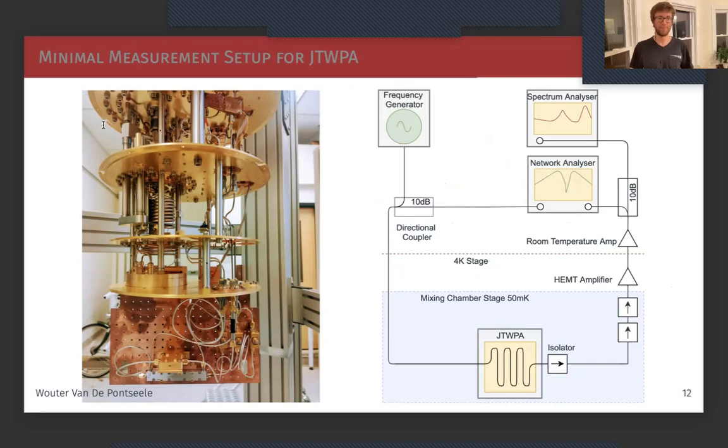So let's go now to the lab that we have at MIT. This is kind of the minimal setup that we use to characterize and test these devices. In the schematic on the right, you have a frequency generator in green on the top left and a network analyzer, and those two will be fed into an input line, goes through our TWPA amplifier, then we go through three isolators to protect it from noise from higher temperature stages. We have a HEMT semiconductor amplifier, then we have a room temperature amplifier, and we read these signals out by a spectrum analyzer and a network analyzer.